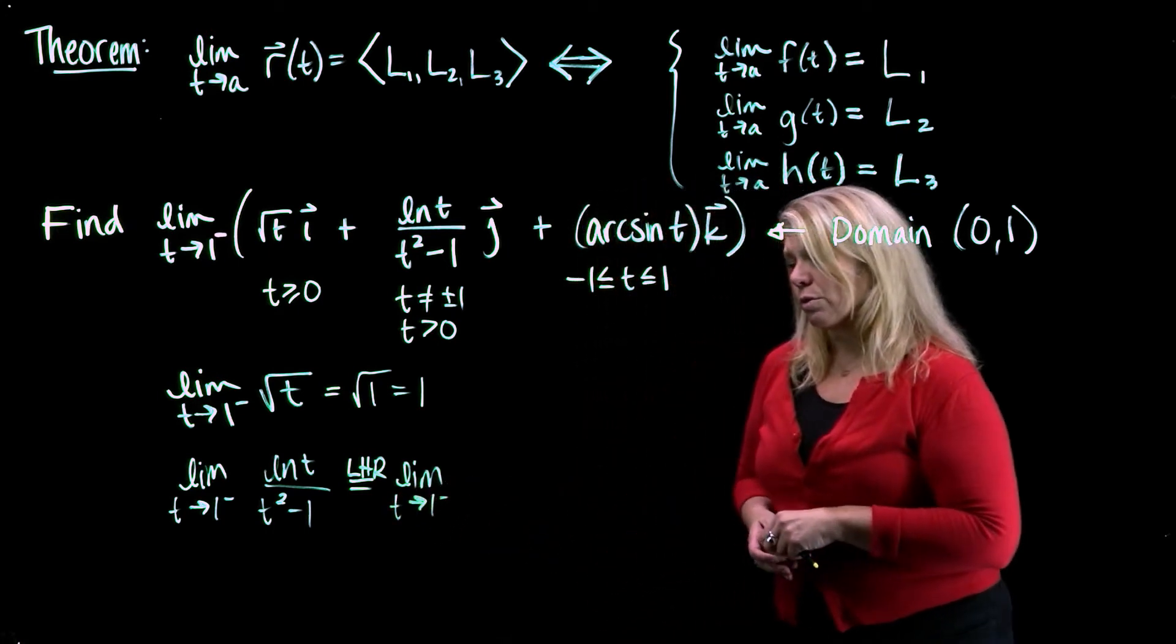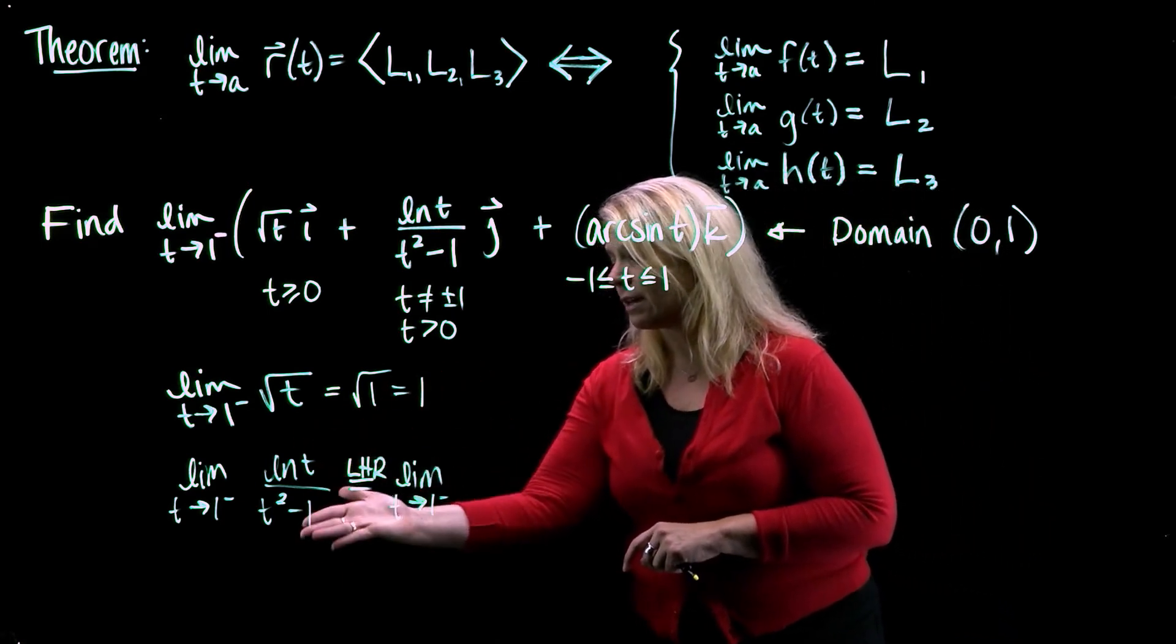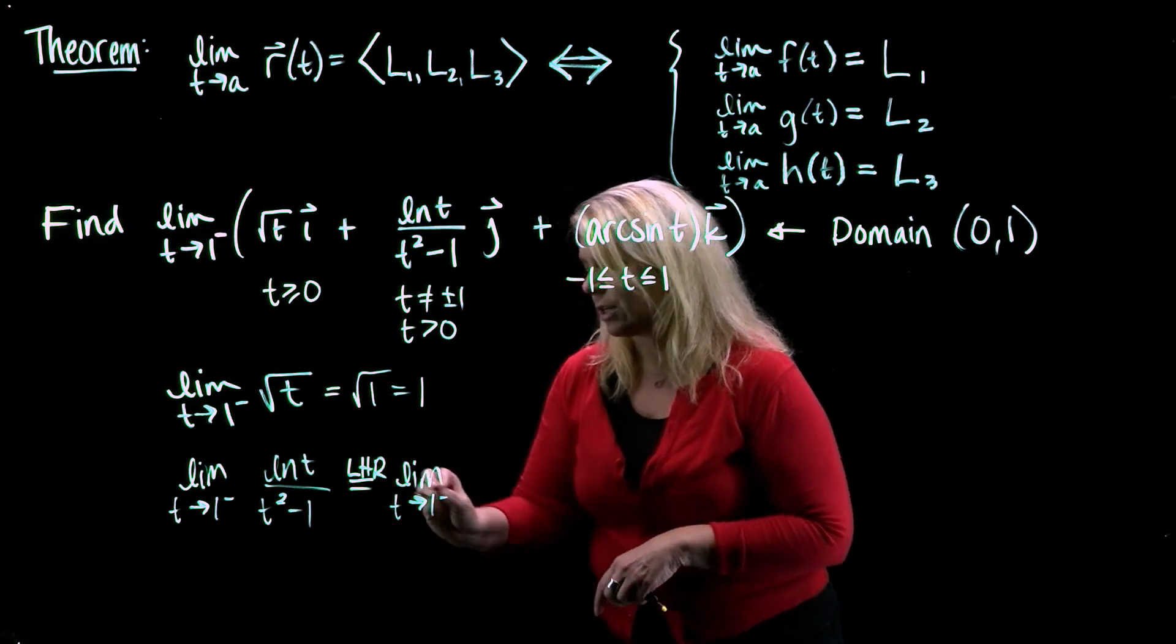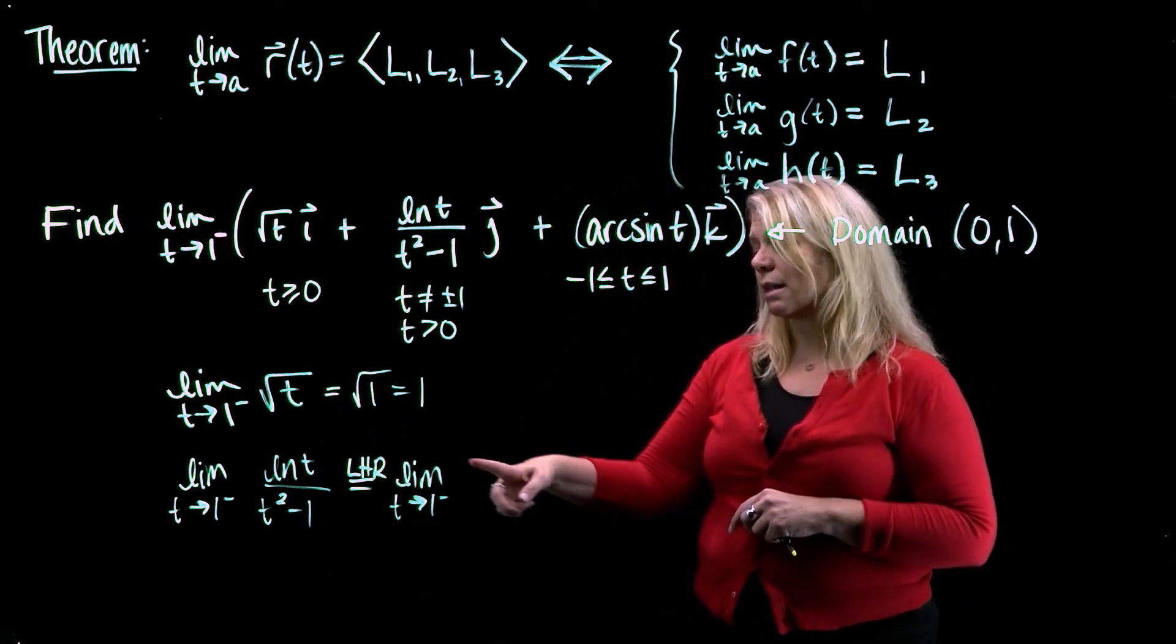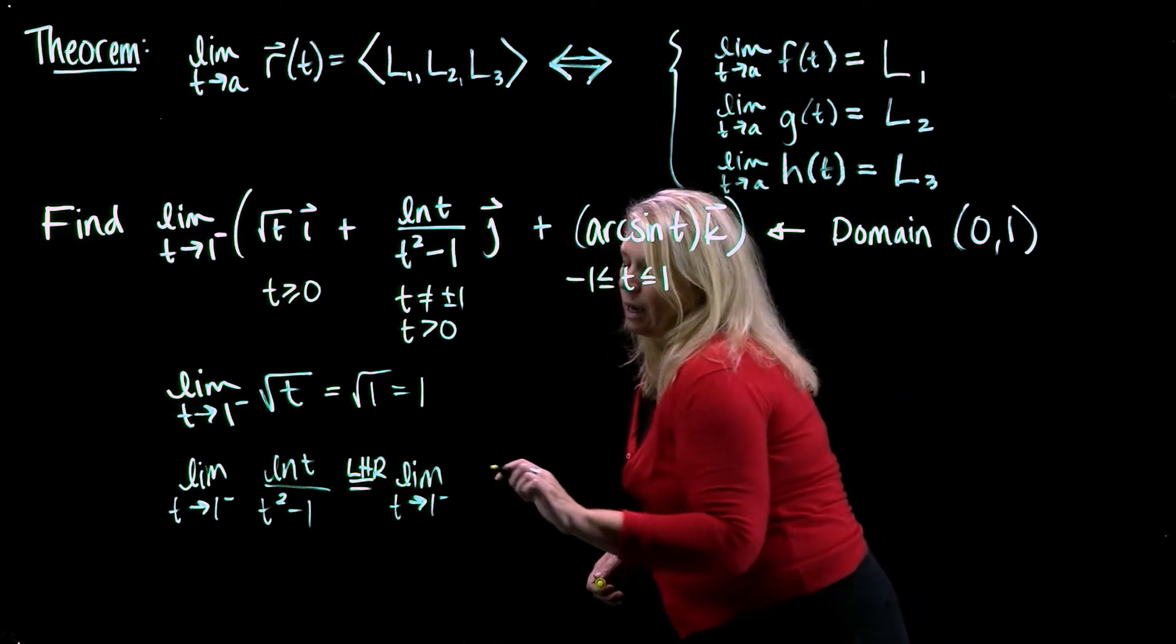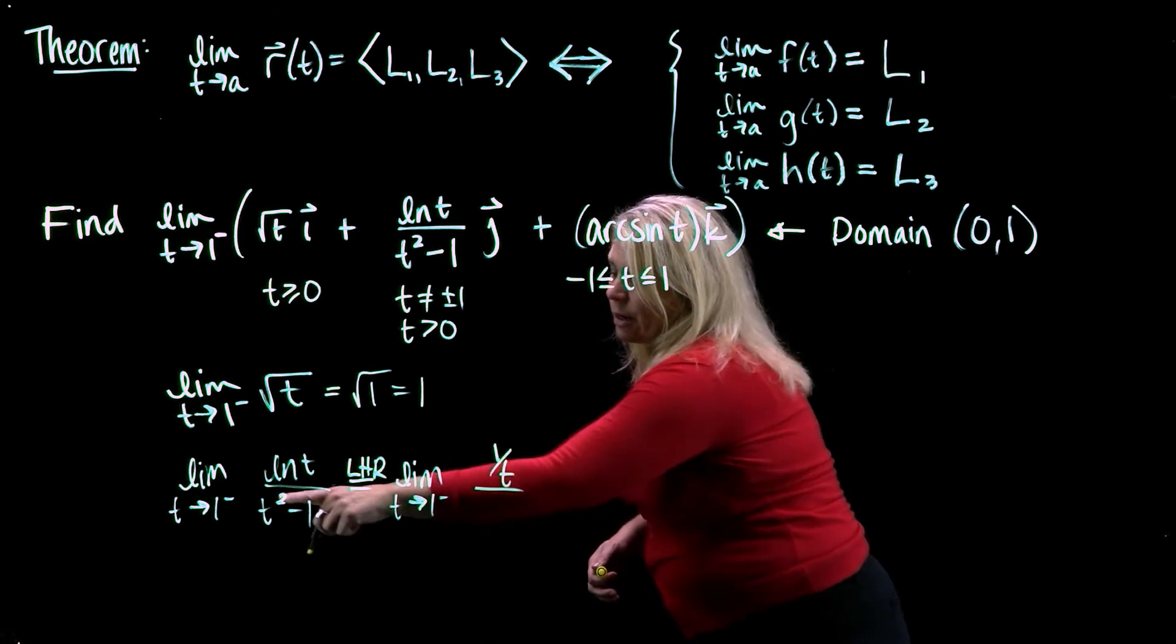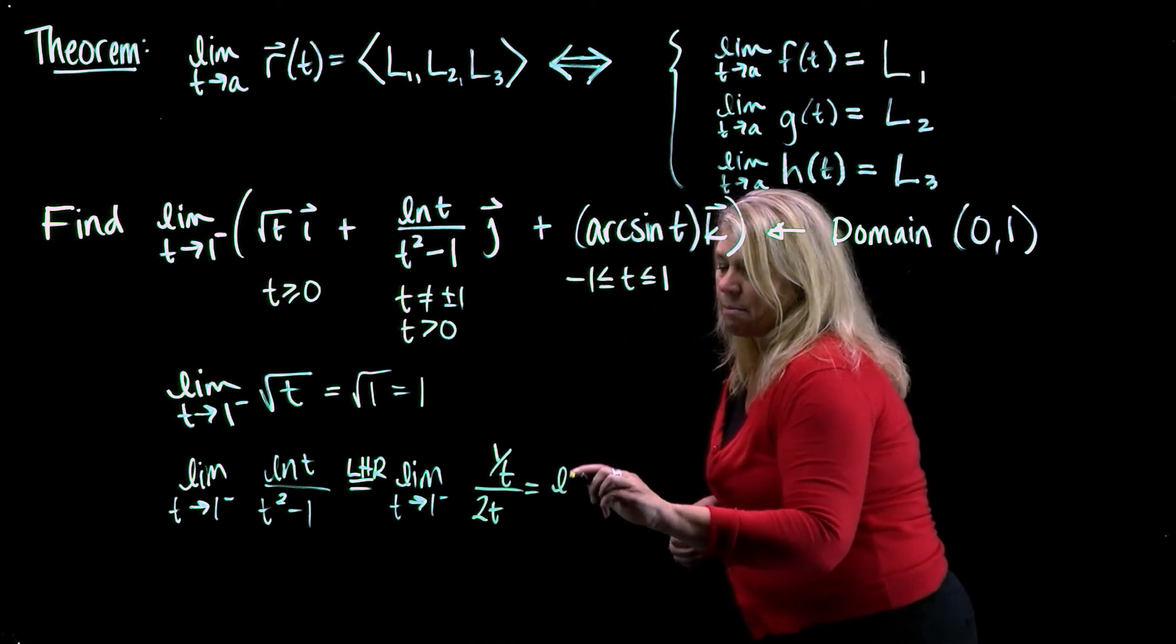All right, so L'Hopital's rule says that if you have an indeterminate form 0 over 0 or infinity over infinity, the limit of this ratio of functions is equal to, provided the limit exists, the limit of the ratio of their derivatives. So derivative of ln t is 1 over t, and derivative of t squared minus 1 is 2t. And I'm going to just clean that up.